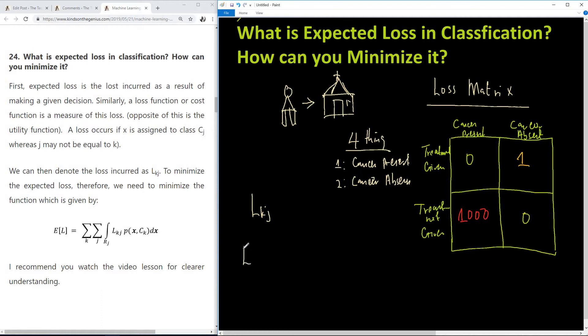Therefore the expected loss, represented as E(L), will be summation over the region k and j for this loss Lkj. Lkj denotes a loss incurred if x is assigned to class cj when it actually belongs to class ck. So loss incurred over this region of k where it should be class k but was assigned to j, for all wrong assignments made. Then we multiply it by the joint probability of x and ck, and we're taking integral over the region rj.